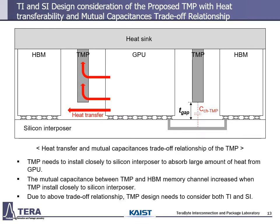This is the thermal integrity and signal integrity design consideration of the proposed TMP, with the heat transferability and mutual capacitance trade-off relationship. In thermal integrity point of view, TMP needs to be installed closely to the silicon interposer to absorb a large amount of heat from the GPU. If not, the remaining parts of the molding compound act as thermal paths from GPU to HBM. But in SI point of view, the mutual capacitance between TMP and HBM memory channel increases when TMP is installed closely to the silicon interposer, degrading SI performance. Due to this heat transferability and mutual capacitance trade-off relationship, TMP is designed to consider both TI and SI.